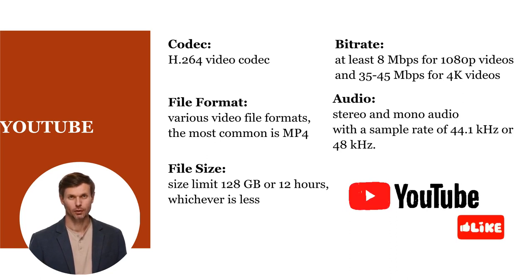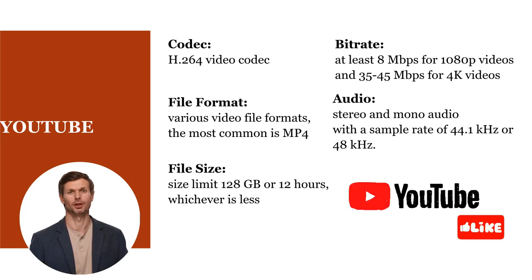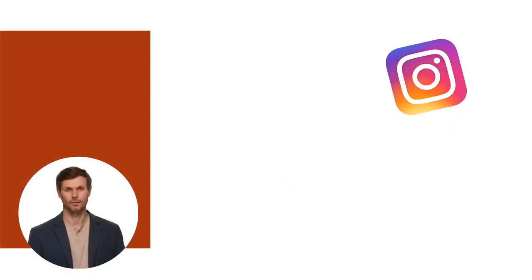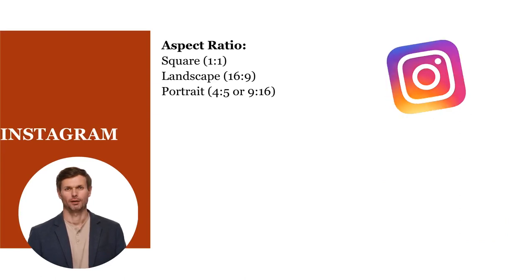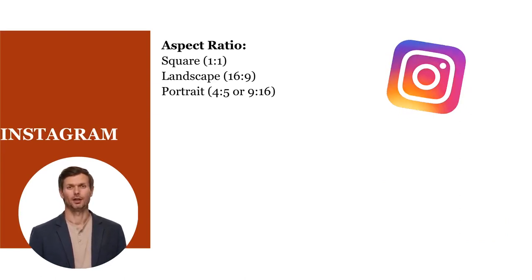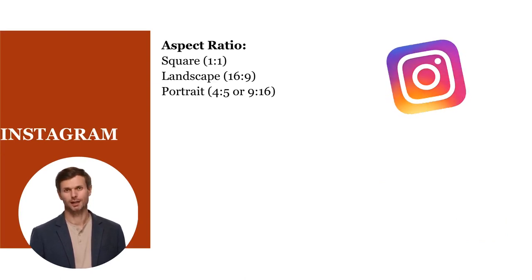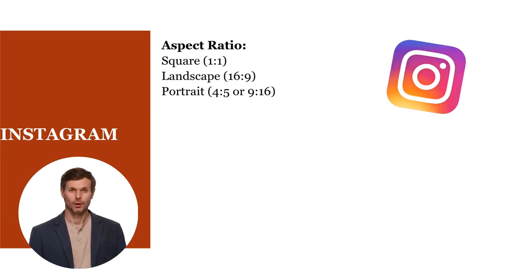Once you've exported your video with the appropriate settings, you can upload it to YouTube through the YouTube website or the YouTube app. Instagram supports several aspect ratios for videos: square (1:1), landscape (16:9), and portrait (4:5 or 9:16). Choose the aspect ratio based on the type of content you are uploading and your preference.